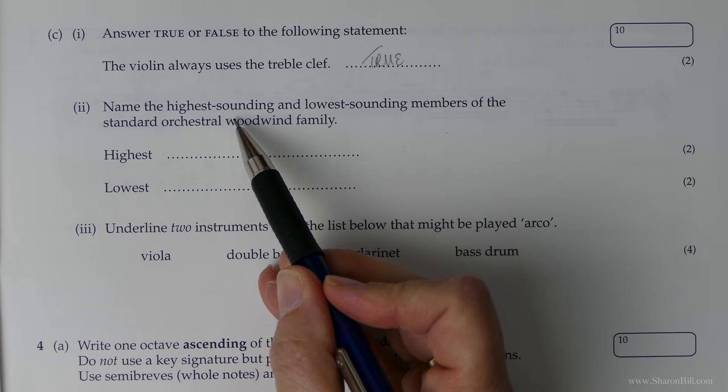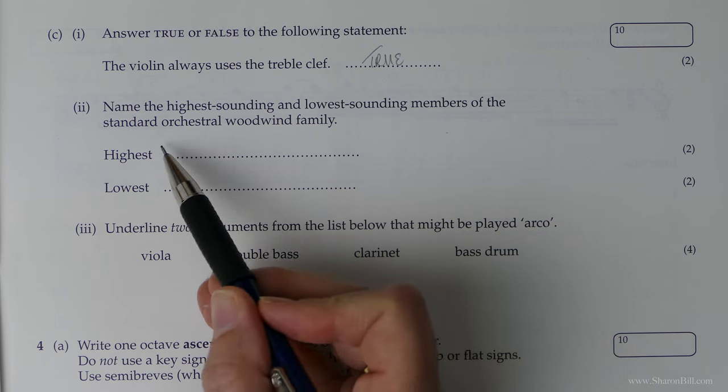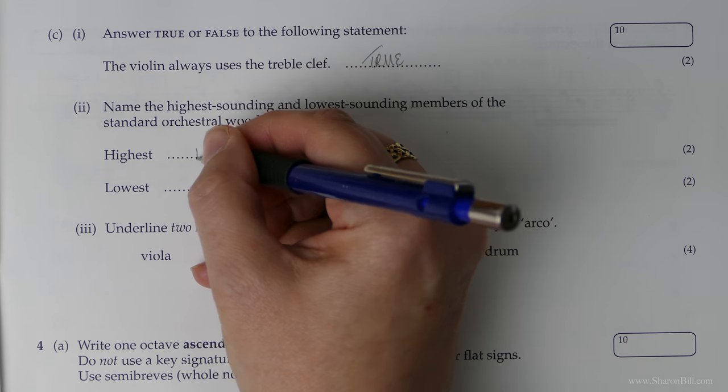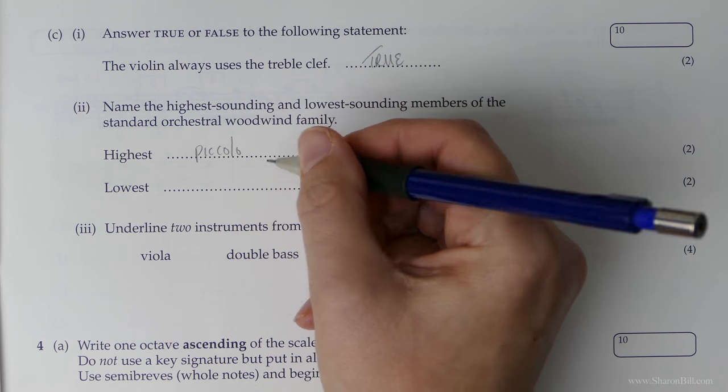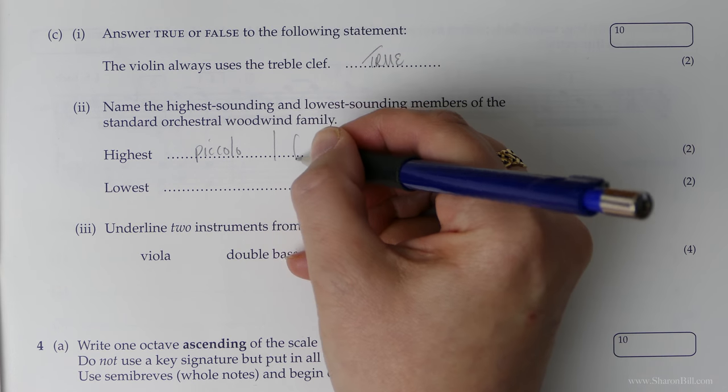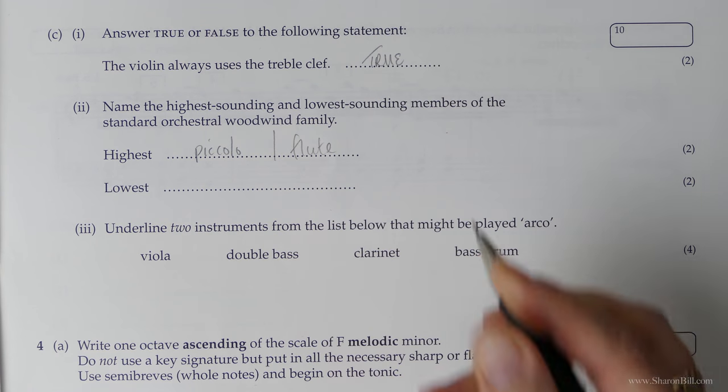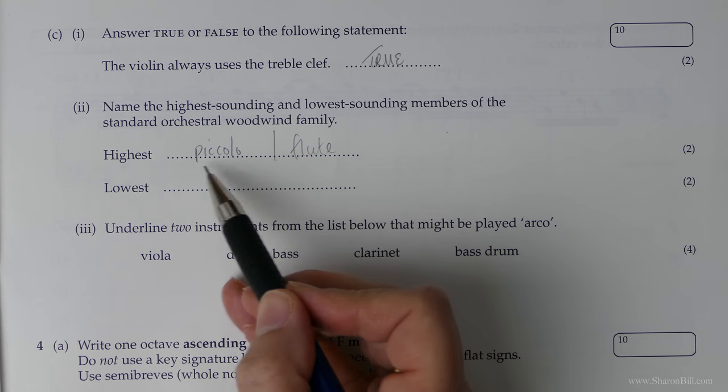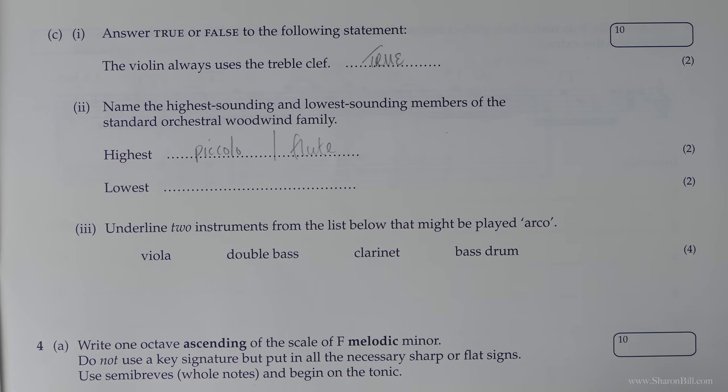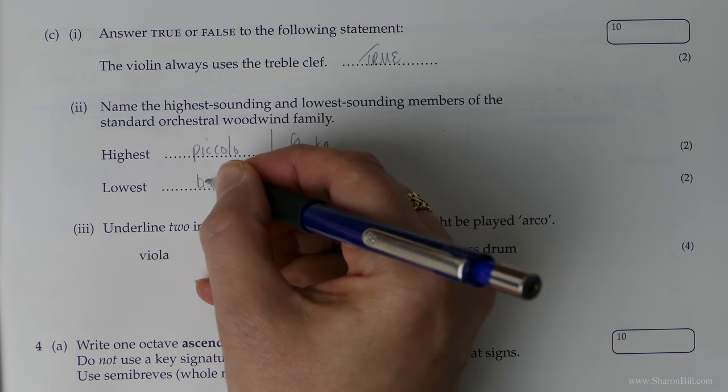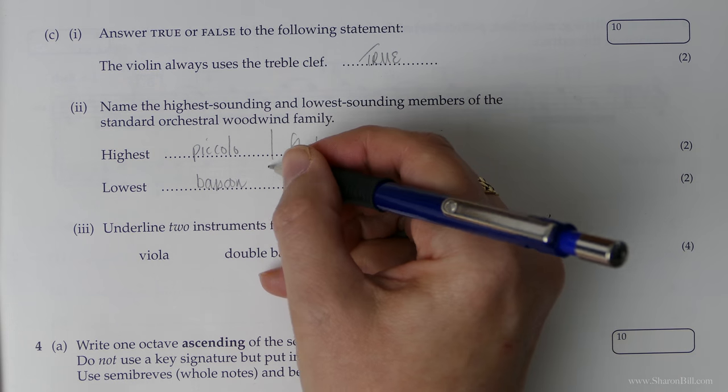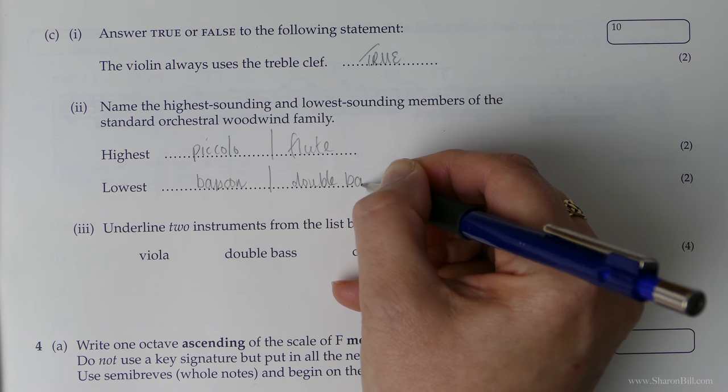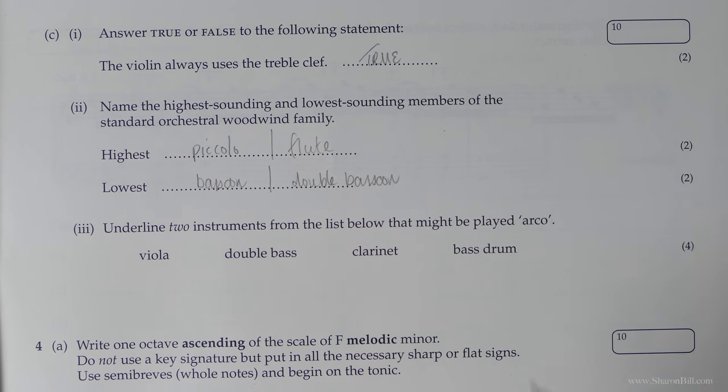And so now, name the highest sounding and lowest sounding members of the standard orchestral woodwind family. The highest really is the piccolo. However, you would be okay to just say flute as well. There's always a flute. There isn't always a piccolo part. But that would be the highest. So either of those will do. The lowest is the bassoon. Or you could be correct in also saying the double bassoon, which transposes an octave lower I think.